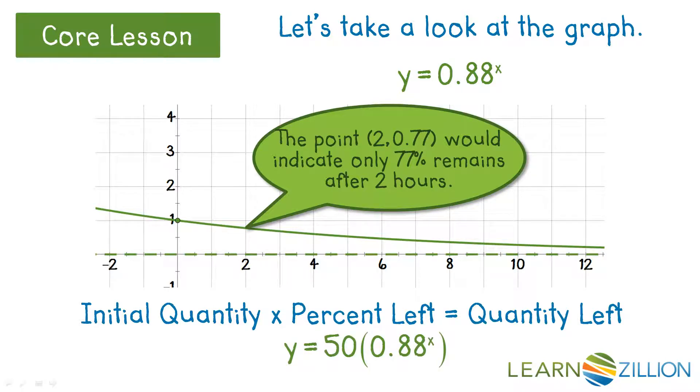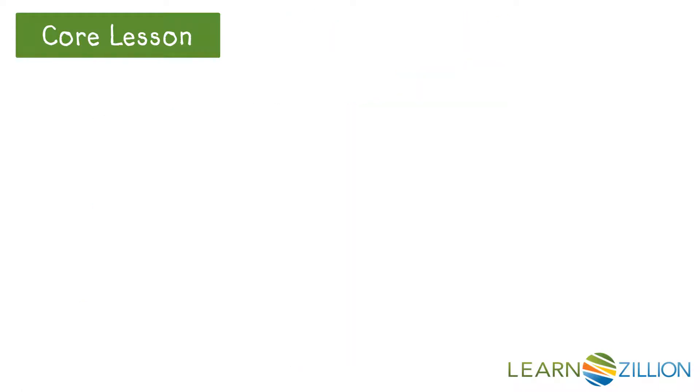So to get our new model, we just multiply by the amount of caffeine in the soda, which is 50 milligrams. But what's that going to do to our graph?